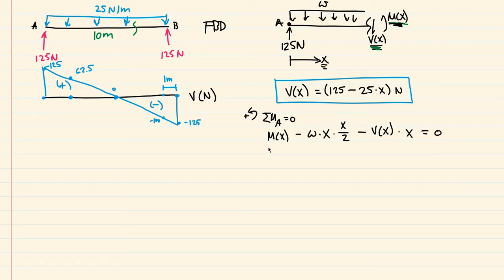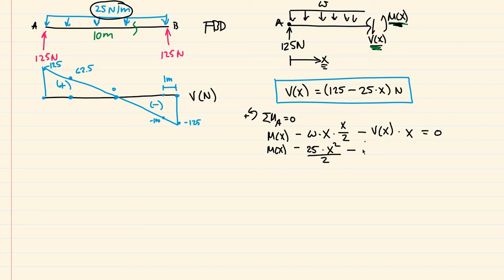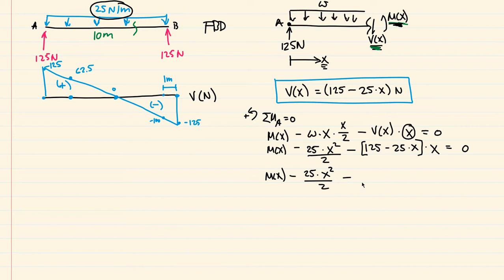Setting that equal to zero and doing the math: m(x) minus W — where W is 25 newtons per meter — so 25 times x squared over 2, then minus the shear equation in brackets, which was 125 minus 25x, all times x, equals zero. Expanding: m(x) minus 25x² over 2 minus 125x plus 25x², with the minus sign distributed to both terms.